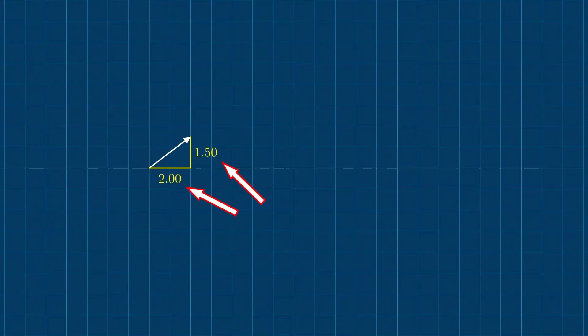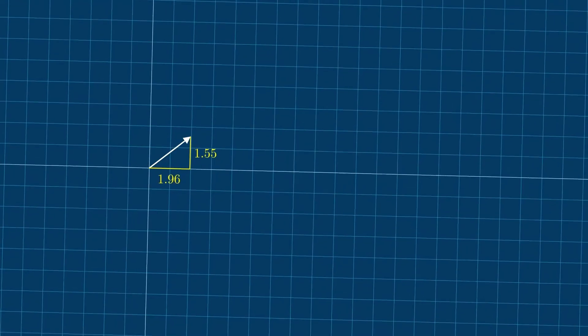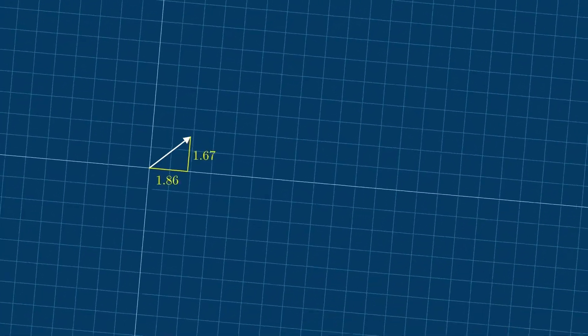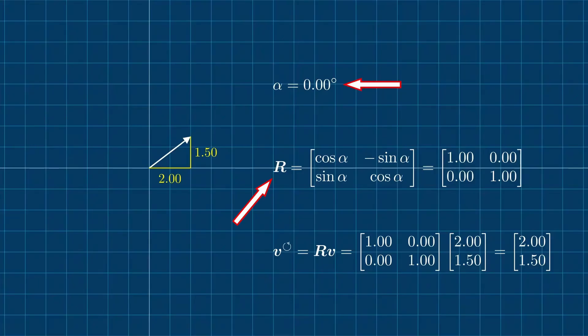In two dimensions we need two numbers to describe a vector or first order tensor. If we rotate the coordinate system, the two numbers describing the tensor change. Mathematically we can describe this change with the rotation matrix R, which depends on the angle alpha by which we rotate the coordinate system. The tensor components in the rotated coordinate system, denoted by V with a small circular arrow, are equal to the rotation matrix R multiplied by the tensor components in the original coordinate system.